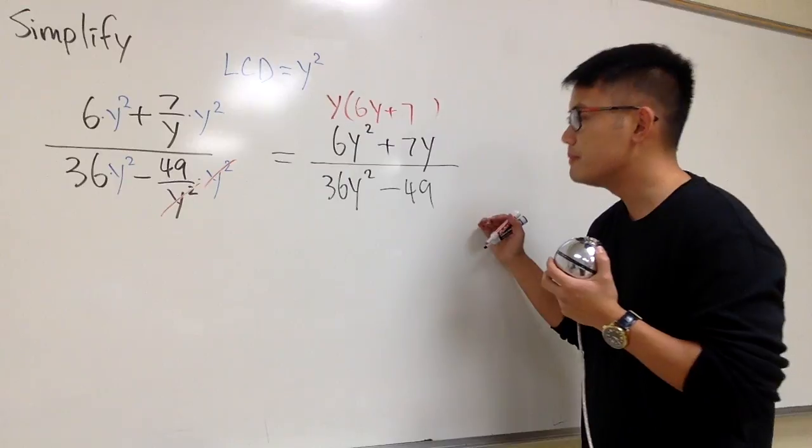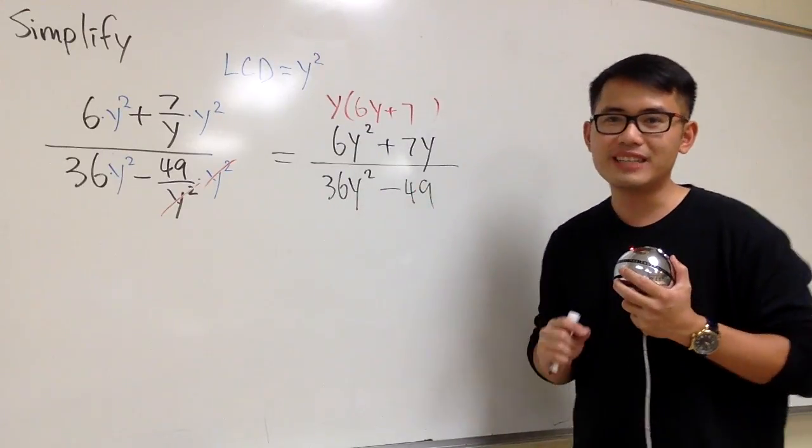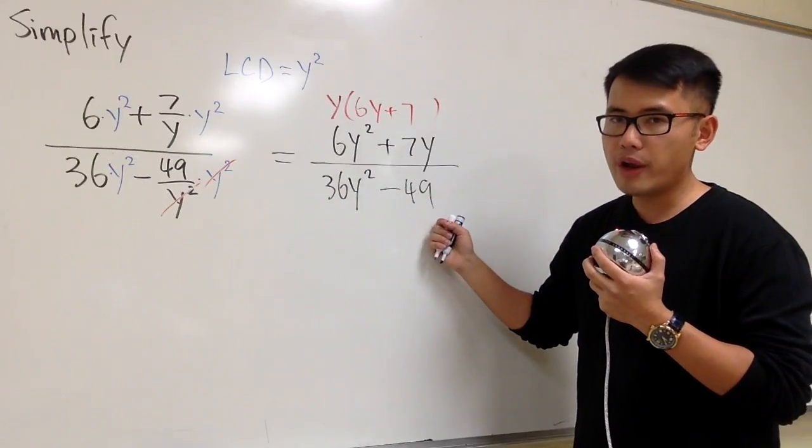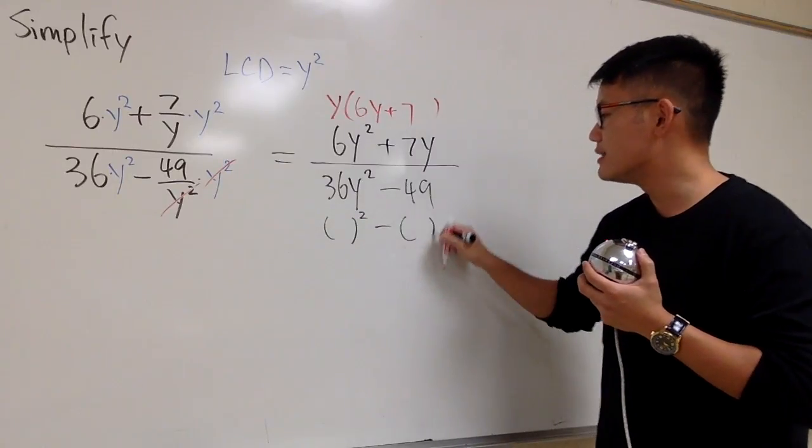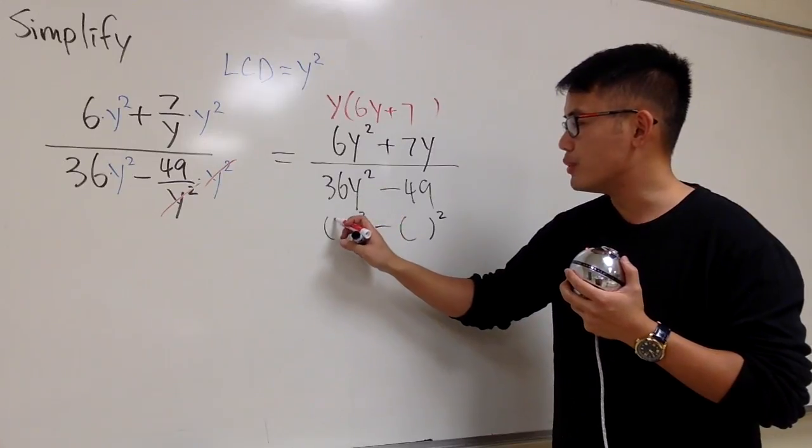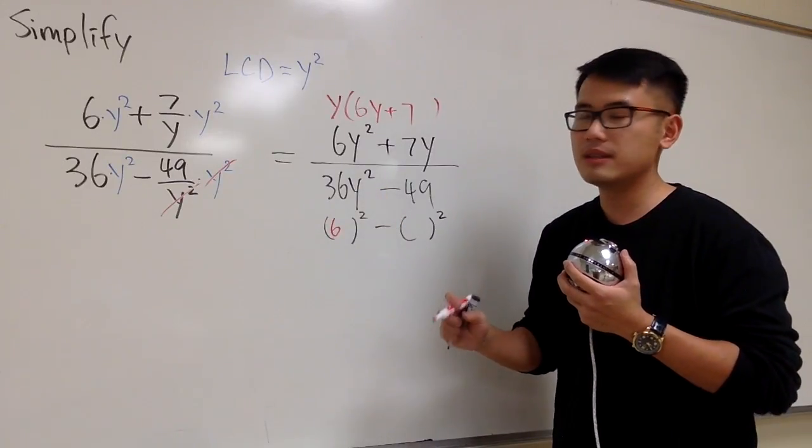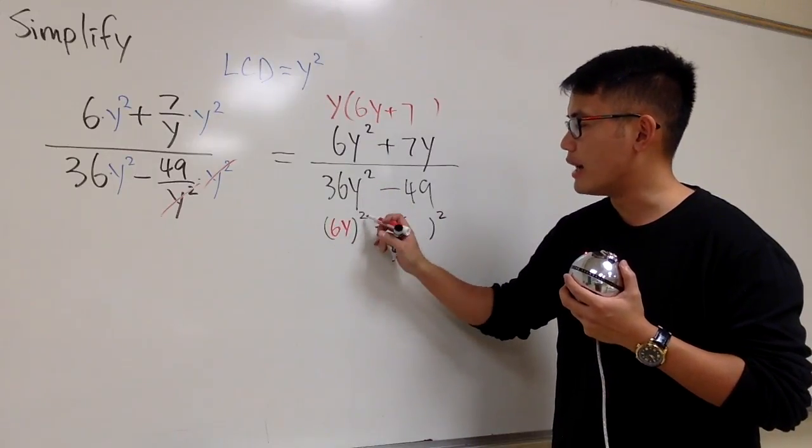And then, as of the bottom, 36y squared minus 49. How can we factor this out? This is the difference of two squares. And we have to look at this as something to the second power minus something to the second power. To get 36, we have to put down 6 right here. 6 to the second power gives us 36. And then for the y squared, I just have to have the y inside, y squared. And then for the 49, we know that is 7 squared.